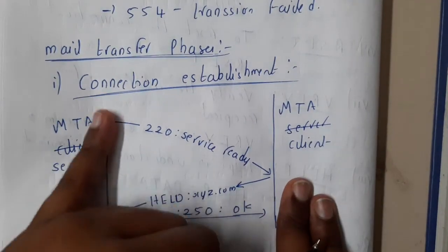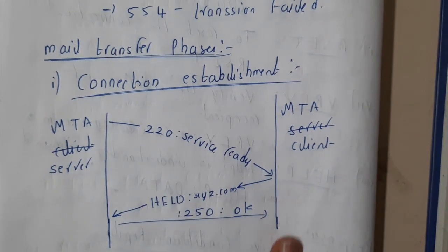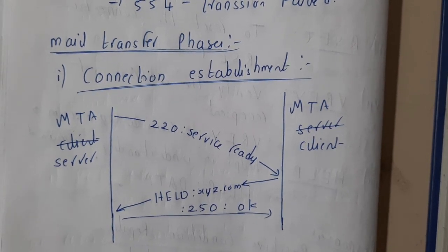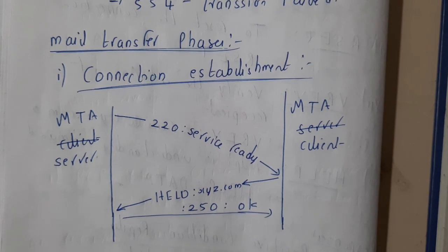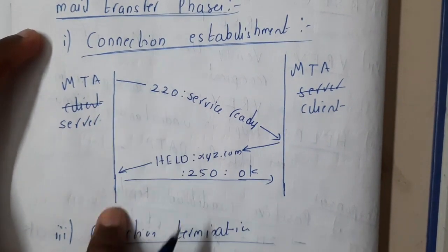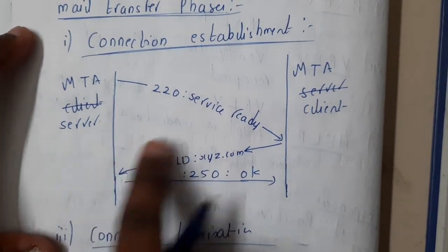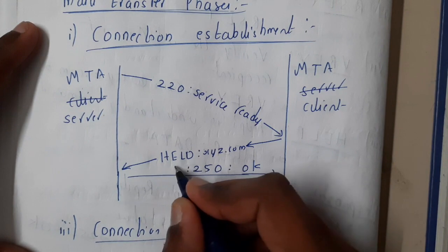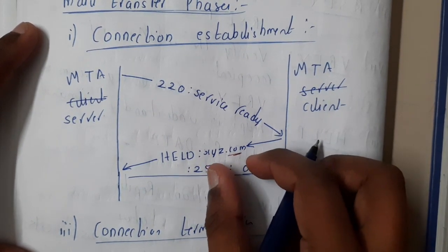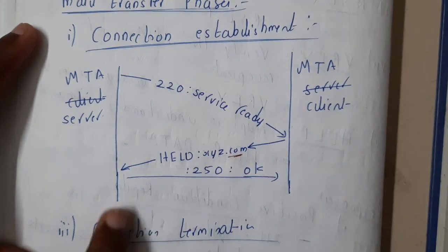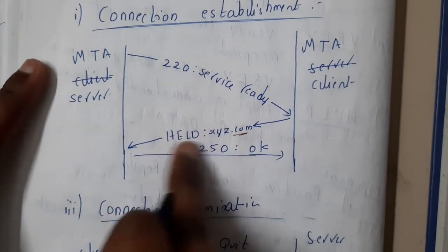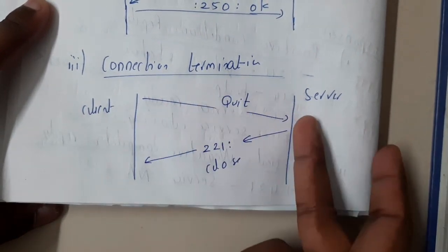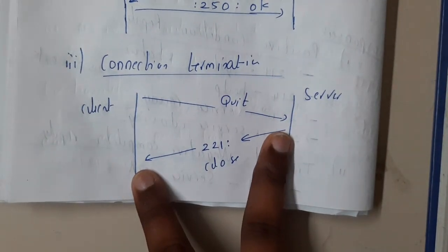There are three steps: establishment, data transfer, and termination. During connection establishment, the server listens 24/7 and the client requests a connection. The client sends HELLO xyz.com, and the server responds with 250 OK, indicating it is ready. For termination, the client sends QUIT and the server responds with 221 to close the connection.